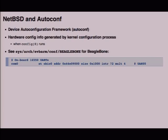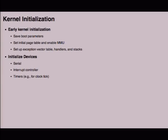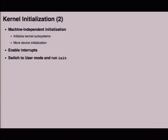NetBSD doesn't use device tree; it uses the auto-configuration framework. Hardware config info is generated by the kernel configuration process when config(8) runs. The NetBSD BeagleBone kernel configuration shows the same UART at 44E09000, same address range, same interrupt. At a high level, early kernel initialization: saves boot parameters, sets an initial page table and enables the MMU, sets up the exception vector table and handlers and stacks, initializes devices (serial, interrupt controller, timers), runs machine-independent initialization, enables interrupts, and switches to user mode to run init.